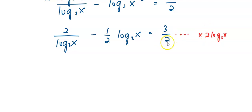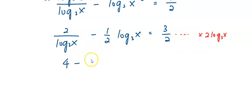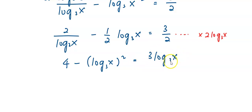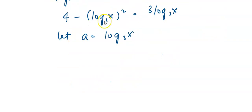To make this into quadratic form, I multiply all terms by 2 log base 3 of x. I multiply by 2 to eliminate the denominator of 2. So 2 over log base 3 of x multiplied by 2 log base 3 of x gives 4. That term becomes log base 3 of x squared. And 3 over 2 multiplied by log base 3 of x gives 3 log base 3 of x. Arranging nicely with a substituted for log base 3 of x, I get a squared plus 3a minus 4 equals 0.